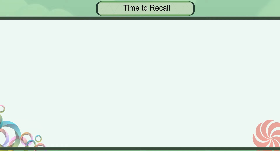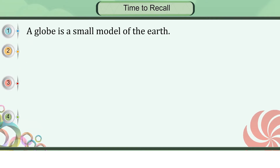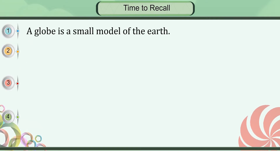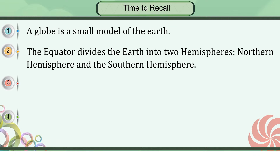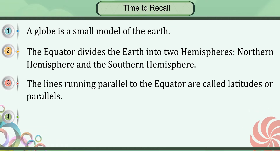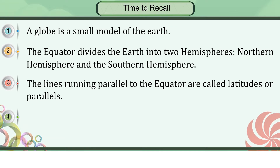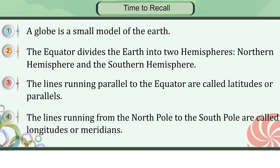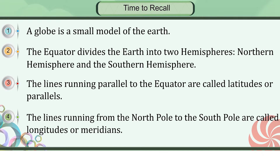Time to recall: A globe is a small model of the Earth. The equator divides the Earth into two hemispheres — northern hemisphere and southern hemisphere. The lines running parallel to the equator are called latitudes or parallels. The lines running from the North Pole to the South Pole are called longitudes or meridians.